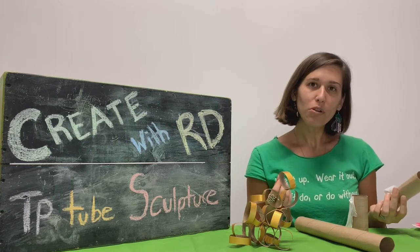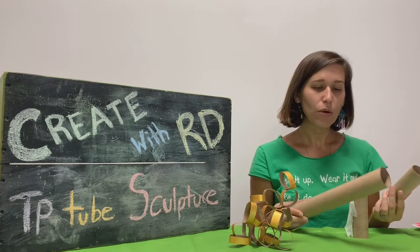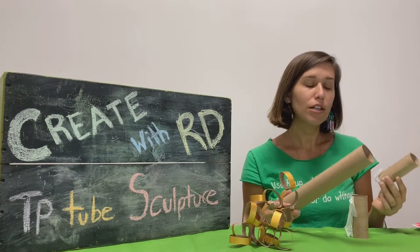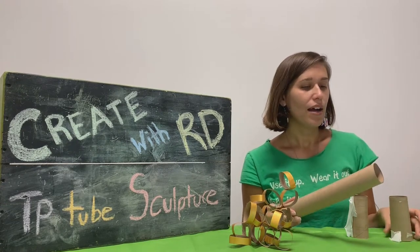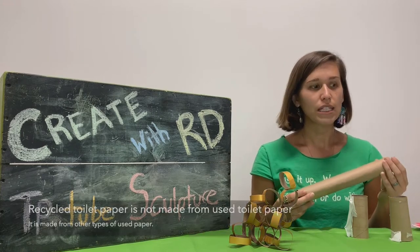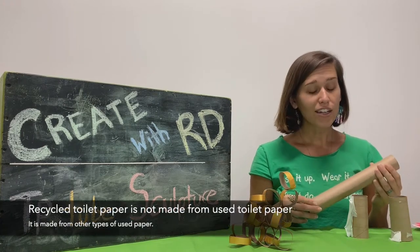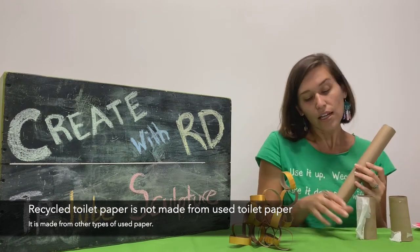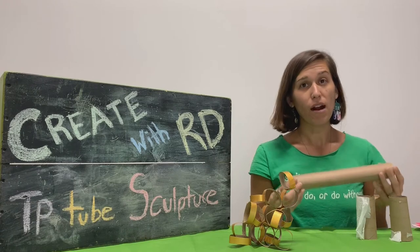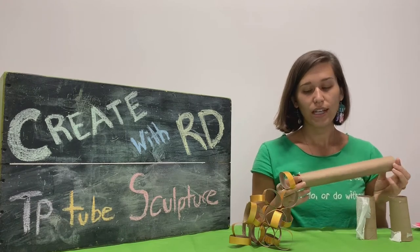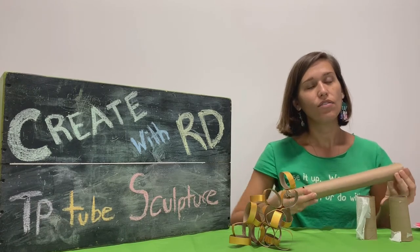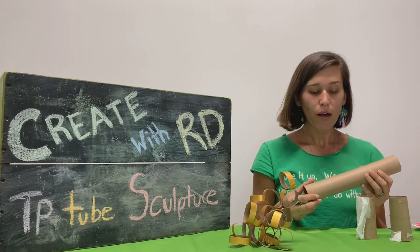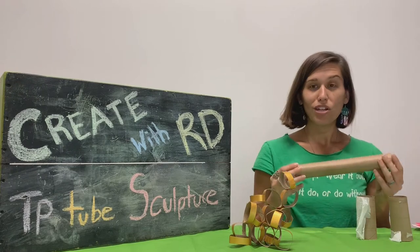So it's really important that we start to rethink the products that we buy by buying recycled material instead of virgin material. And virgin material means that it's directly from the tree. It's never been used before. Recycled, and I'm not talking about recycled tissue paper. That would be icky. I'm just talking about recycled paper products. If we just switched to recycled paper products, we would save so many trees and so much water. So think about the products that you use and remember that we can reuse.